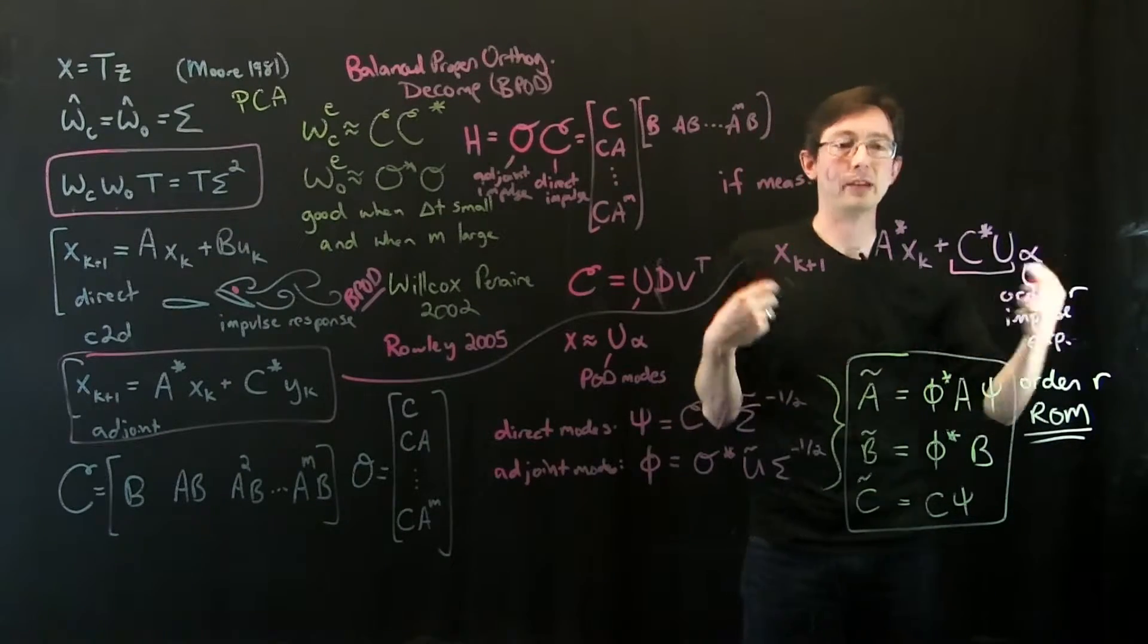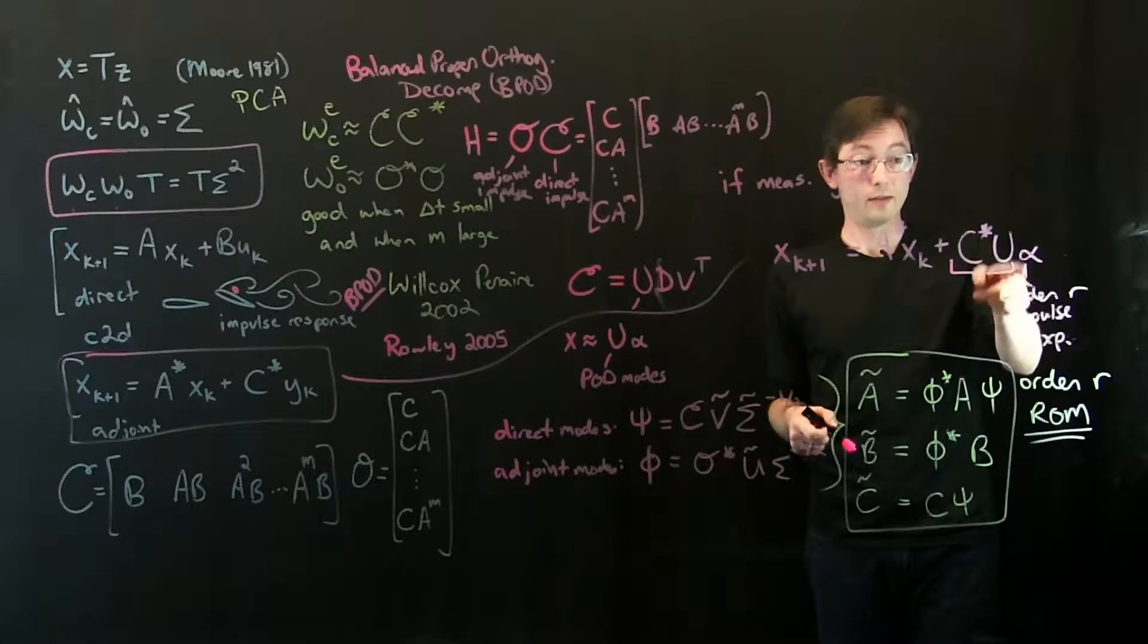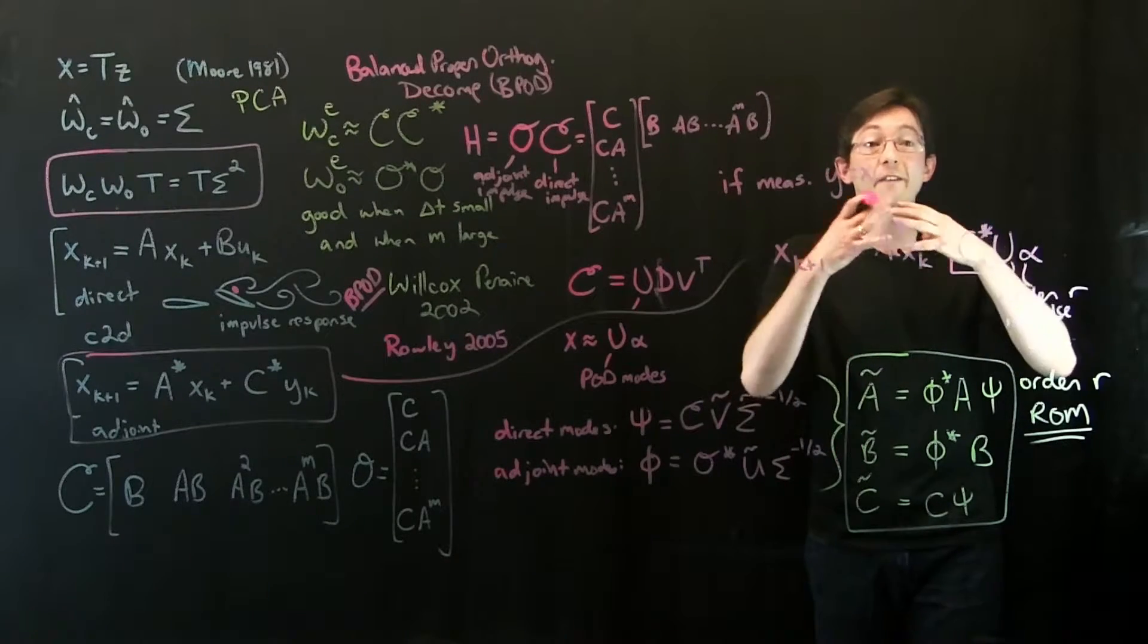And then this is a matrix and I only have to do order R impulse experiments. Remember, I shouldn't say experiment. These are numerical experiments or simulations. But remember, for every single measurement in alpha, I have to do a full simulation.